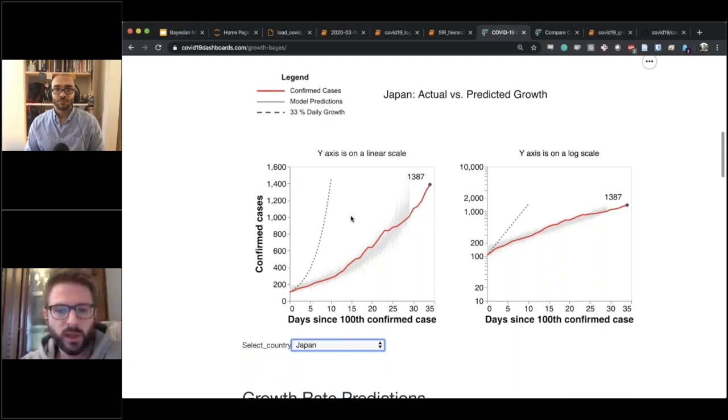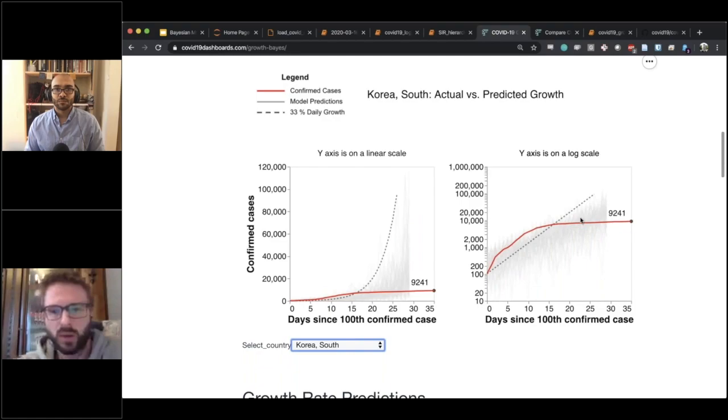But then you also have countries like South Korea where the model is just - actually, I see that I need to fix this, but you can see, well, this is definitely not an exponential. So here's the log scale, here's the linear scale. So they really managed to completely dampen the number of new cases. And this is where the model breaks down.